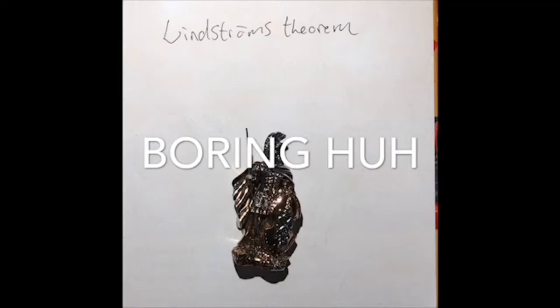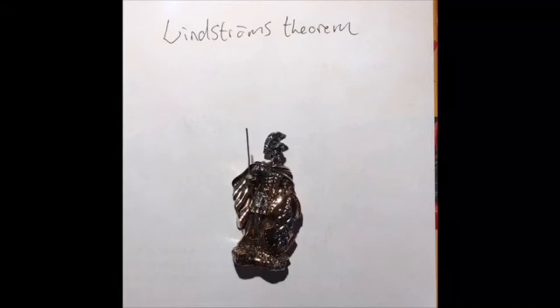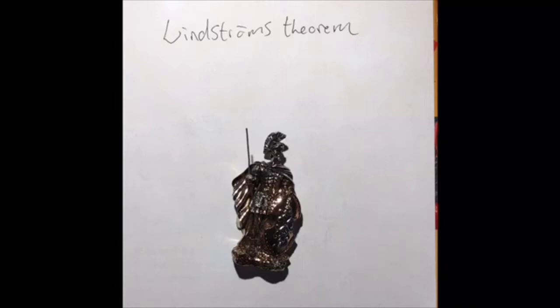Moreover, for every n ∈ ℕ, M models R_n(x₁,...,xn, y₁,...,yn) implies: for all x, there exists y such that R_{n+1}(x₁,...,xn, x, y₁,...,yn, y); and for all y, there exists x such that R_{n+1}(x₁,...,xn, x, y₁,...,yn, y). Finally, M models: for all x there exists y with R₁(x,y), and for all y there exists x with R₁(x,y). We have listed countably many first-order sentences that hold in M.